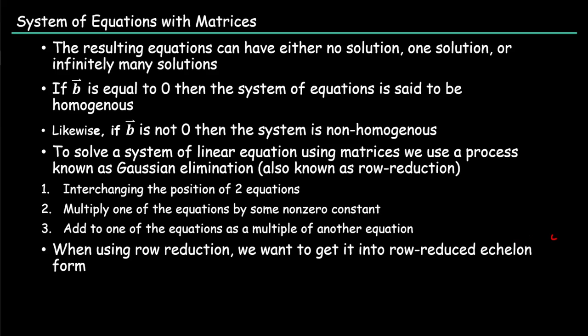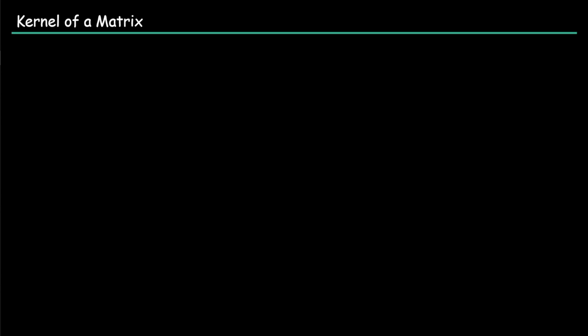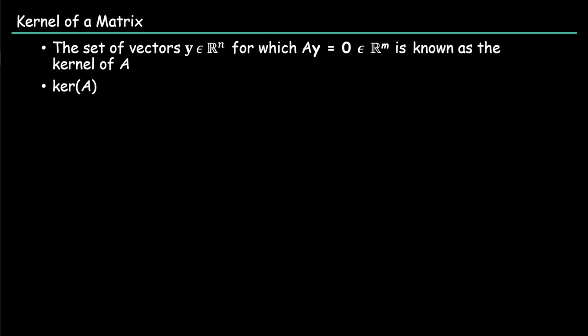Lastly, before we do the examples, we'll be discussing about the kernel of a matrix. The kernel is basically a set of vectors Y in the dimensions of N for which the matrix A multiplied by that vector is equal to 0. That is known as the kernel of matrix A. Another way that people write it is just ker(A).